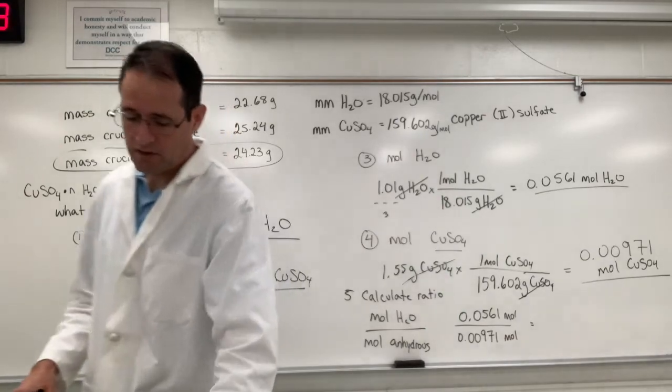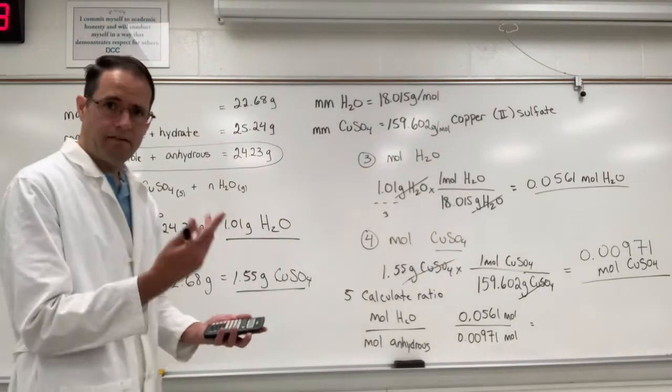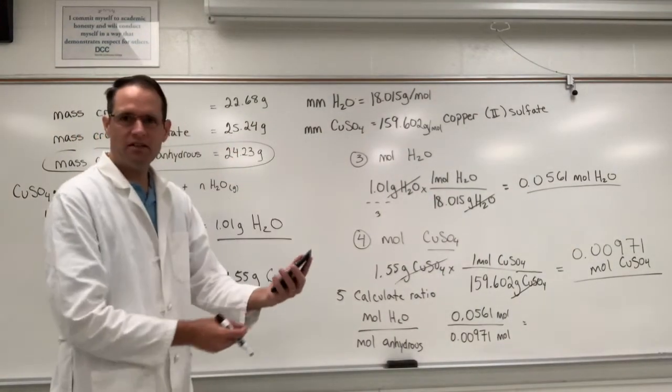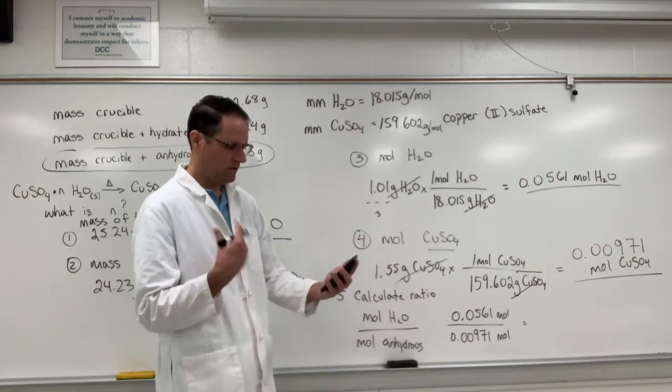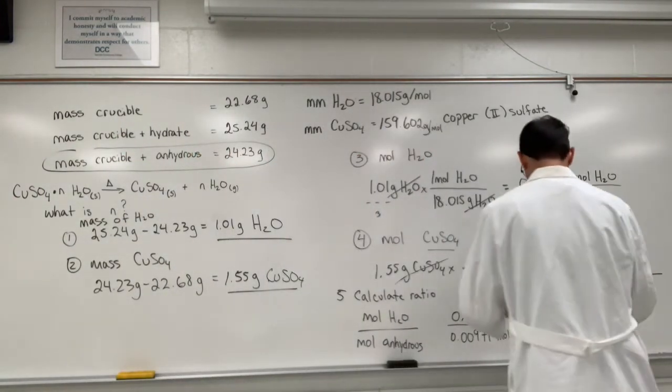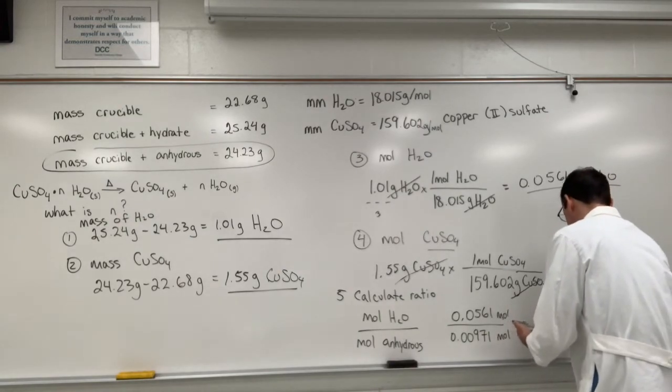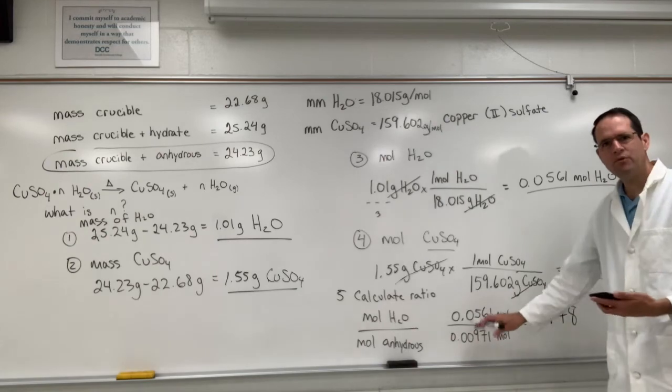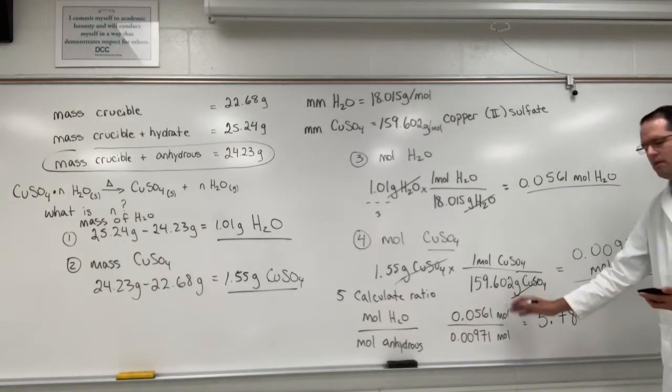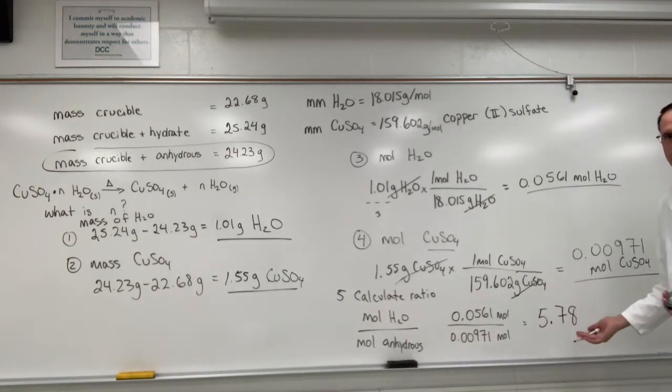And when we do this on our calculator, I'll show you what we get and then we'll round it up again. And on my calculator, I calculated this ratio right here to be 5.7775, etc. Now if I want to keep three sig figs, I would just write this. The moles cancel, so that's my number there.